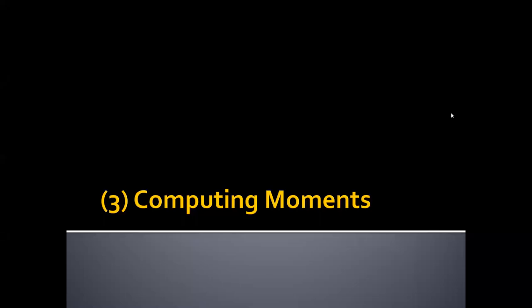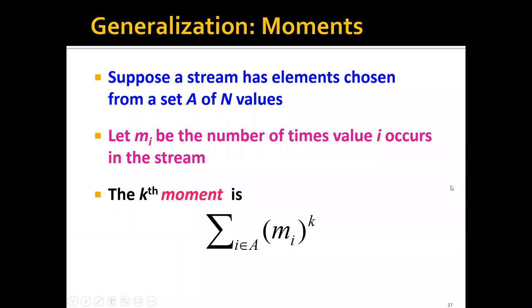In this part of the lecture, we'll talk about the third problem, which is to compute or estimate the moments in a data stream. What are moments in a data stream exactly? Suppose a stream has elements chosen from a set A of n values, and let m_i be the number of times value i occurs in the stream, where i is an index for each distinct item.